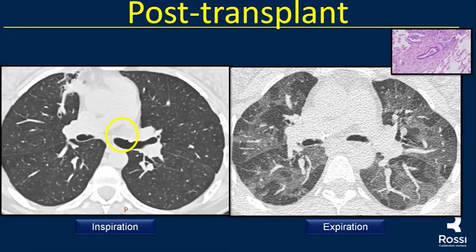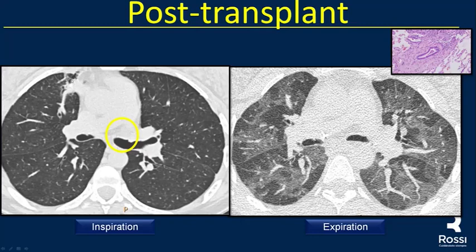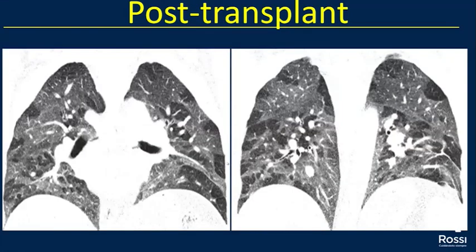This is a post-lung transplant patient who presented to her pulmonologist with reduced FEV1 on functional studies. An inspiratory and expiratory CT was performed. The inspiratory CT shows subtle areas of mosaic attenuation. The expiratory CT reveals areas of air trapping and normal lung due to chronic post-transplant rejection. A coronal view confirms air trapping in both lungs.